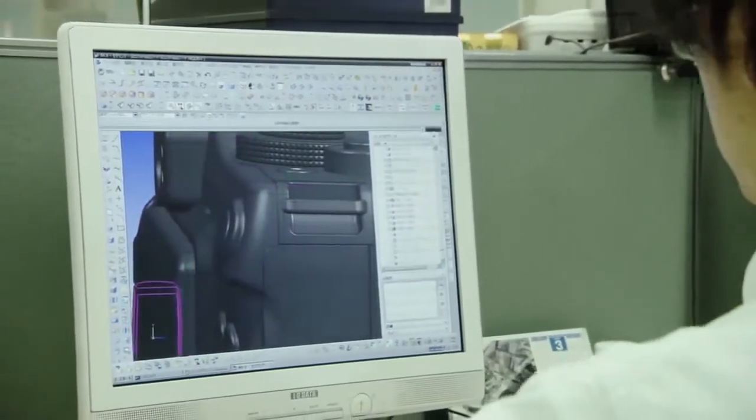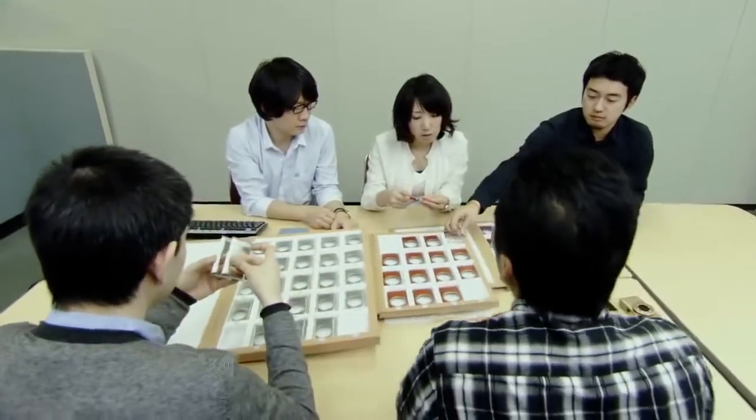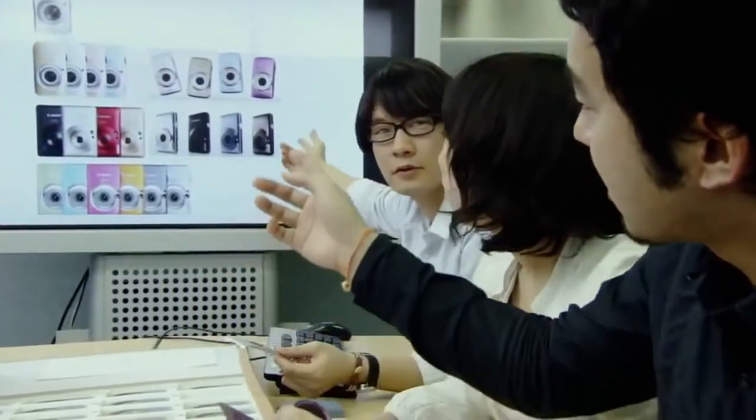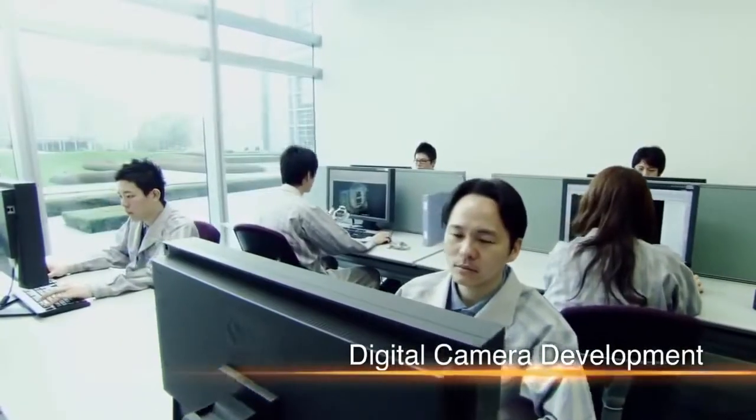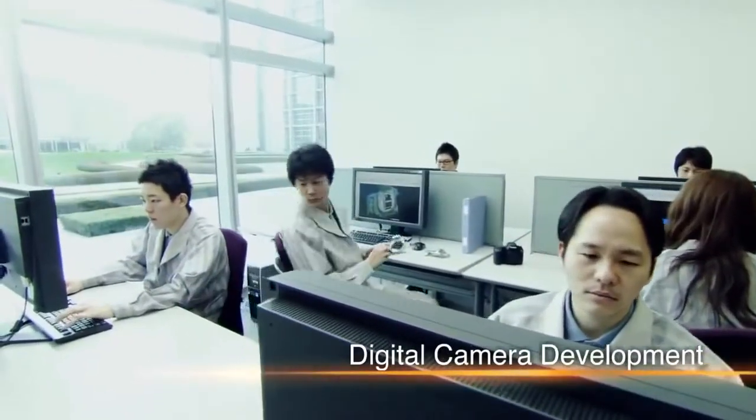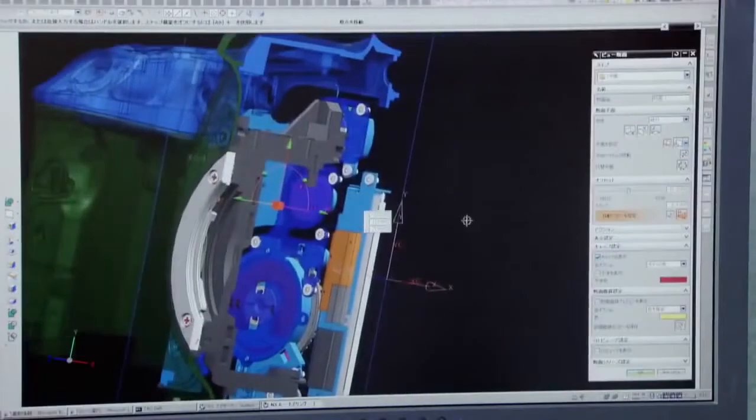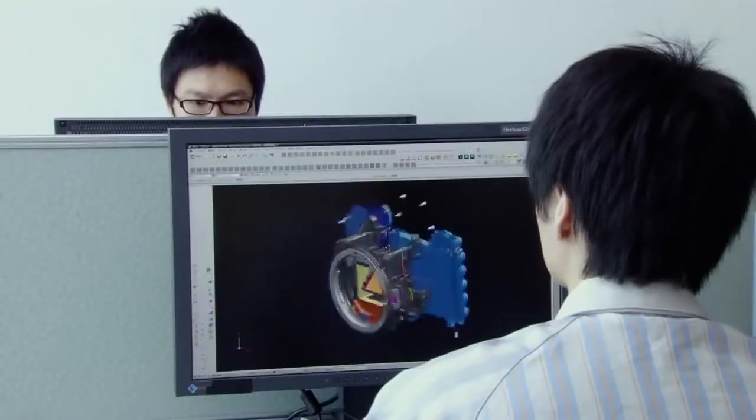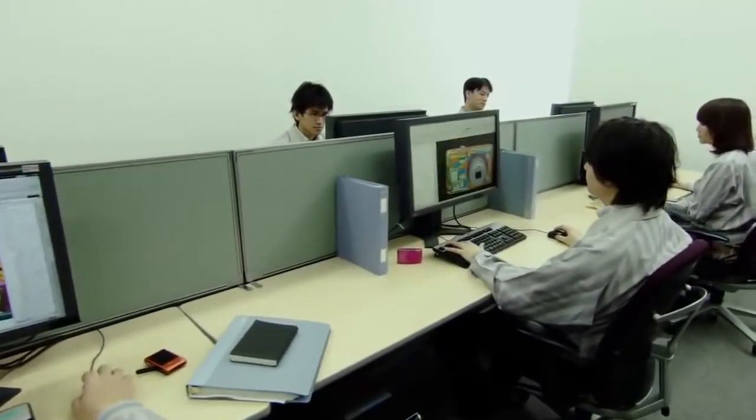The color and texture of the different parts and the camera's overall ease of use are then considered. The data is then passed on to the development team. Designing on a computer, the team incorporates various features and functions, striving to achieve a body design free of waste.